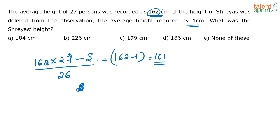This is the traditional way to solve this question. We found the total height of all 27 students, subtracted Shreya's height. The new average is this total height divided by the 26 students who are left. That equals 161. Solve for S.